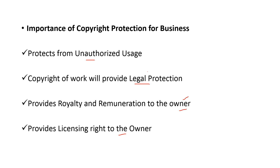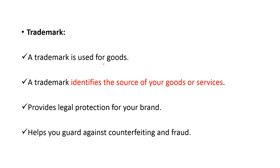Next is trademark, which is used for goods and identifies the source of your goods or services. Logos and identity marks are trademarks. It provides legal protection for your brand — for example, Bata has their logo and identity that belongs to them only, and no one can copy it. It helps you guard against counterfeiting and fraud.